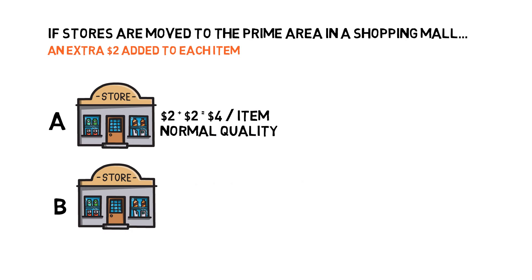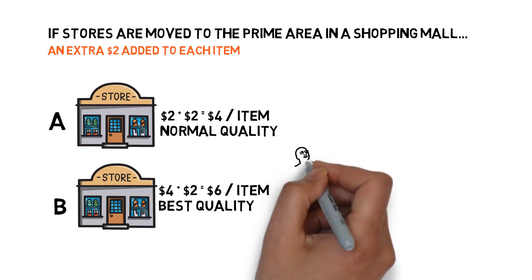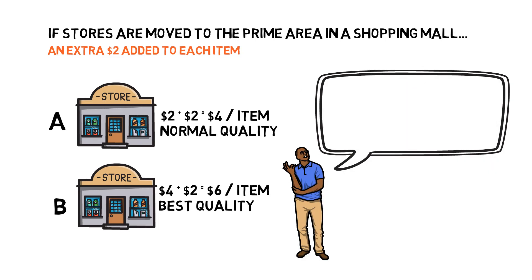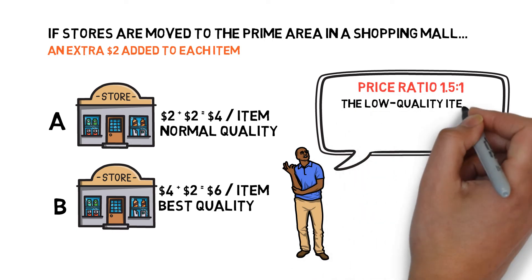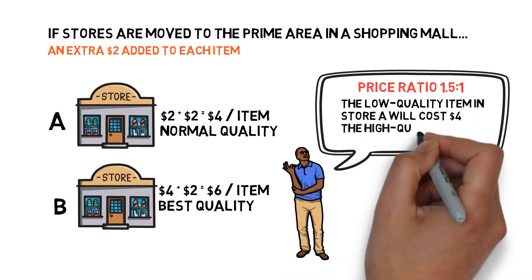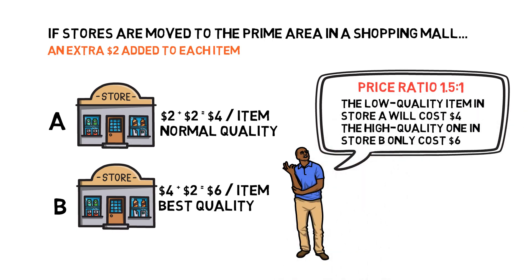Similarly, the price in Store B increases to six dollars per item. Now when you compare the price-performance ratio for those two stores, you may get a different result than in the rural area. The price ratio between the two stores decreased to 1.5, meaning the low-quality item in Store A costs four dollars and the high-quality one in Store B costs only six dollars. In this case, more customers will prefer items from Store B because they only need to pay two dollars more to get a high-quality one.